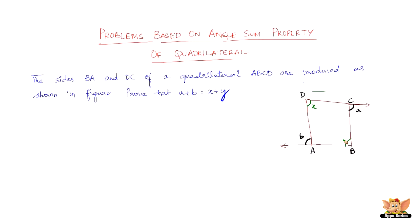X and Y are marked in the figure. We need to prove that A plus B equals X plus Y. The first step is to join BD. The joining of BD divides the quadrilateral ABCD into two triangles.